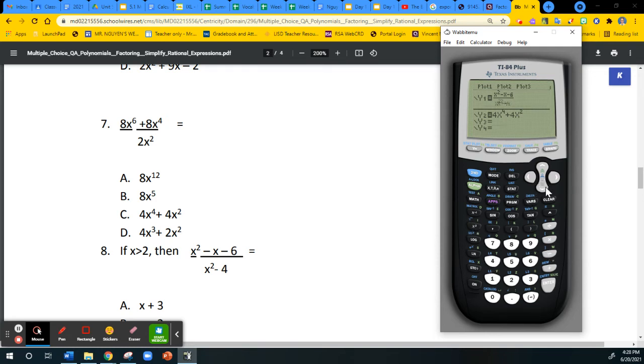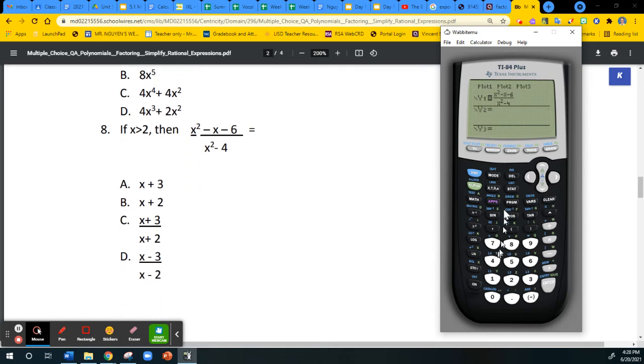I go down to my Y2 and I'm going to type in my first answer choice. My first answer choice is x plus 3. I'm going to go to the table and look at the values to see if they are the same. No, they're not. I'm looking for the same Y values, but they're not, so that means A is not the answer. I'm going to skip B because B looks kind of like A. My instincts is telling me it might not be the correct answer either because A is wrong. So I'm going to test C.